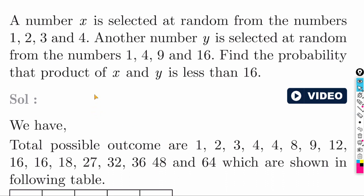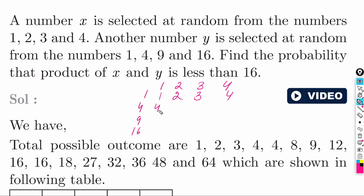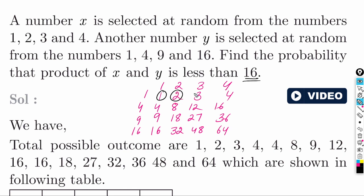A number is selected at random from {1, 2, 3, 4} and another from {1, 4, 9, 16}. We find all products. Products with 1: 1, 2, 3, 4. With 4: 4, 8, 12, 16. With 9: 9, 18, 27, 36. With 16: 16, 32, 48, 64. Total outcomes = 4 × 4 = 16. Find probability that the product is less than 16. Products less than 16: 1, 2, 3, 4, 4, 8, 9, 12 — counting gives 9 values. Answer: 9 by 16.